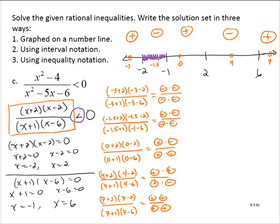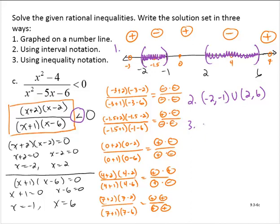The shaded intervals are between negative 2 and negative 1 and between 2 and 6. Since it's strictly less than 0, we can't include any endpoints, so parentheses on all endpoints. In interval notation: negative 2 to negative 1, union 2 to 6. In inequality notation: negative 2 is less than x is less than negative 1, or 2 is less than x is less than 6.